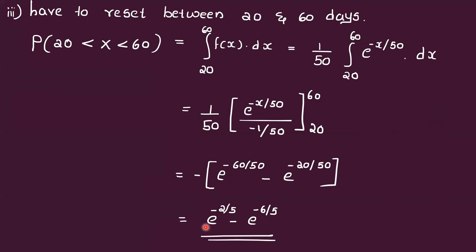For part three, the probability that the camera has to be reset between 20 and 60 days: P(20 < X < 60) = integral from 20 to 60 of f(x) dx. Substituting f(x) = (1/50) * e^(-x/50) and integrating, we get e^(-x/50) divided by (-1/50), evaluated from 20 to 60, yielding e^(-2/5) minus e^(-6/5).